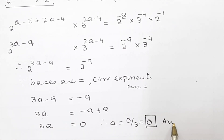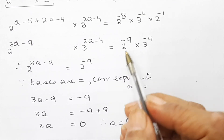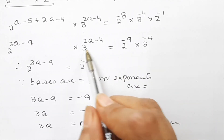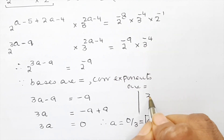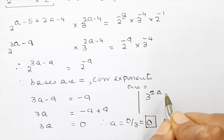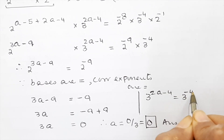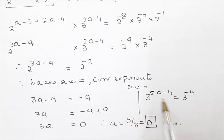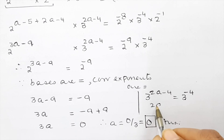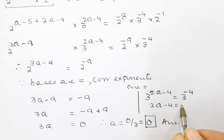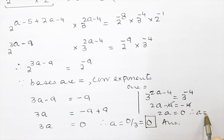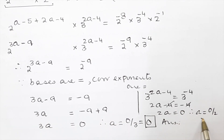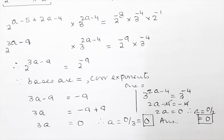Now you might ask what happens with the base 3. We can equate those the same way: 3 to the power (2a minus 4) equals 3 to the power minus 4. Again, since the bases are equal, the corresponding exponents are equal. So 2a minus 4 equals minus 4, giving 2a equals 0, therefore a equals 0 upon 2, which is again 0. So I hope the solution is clear.